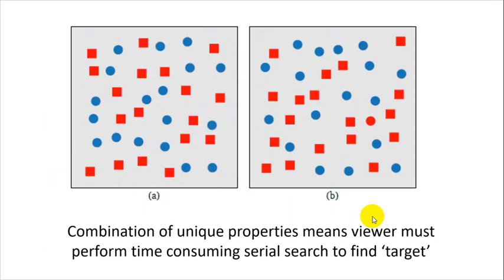Okay, what happens if we combine a variety of visual properties? Which one of these images has a red circle? So here we're dealing with red squares and blue circles, but there's a red circle in there.